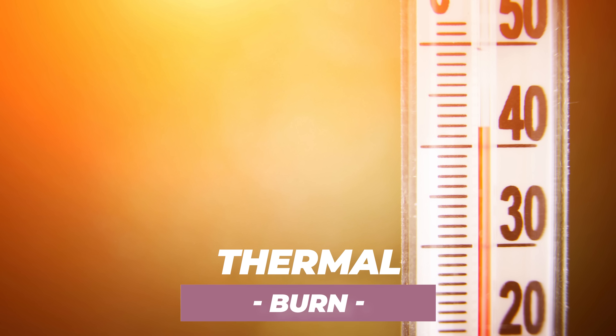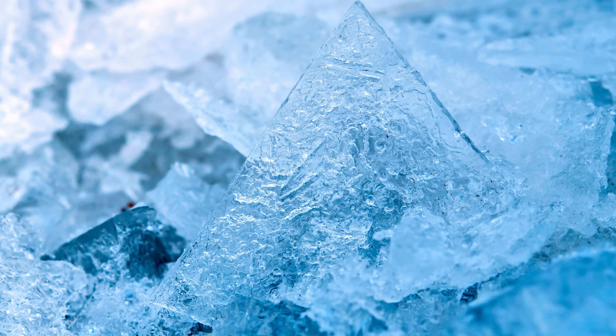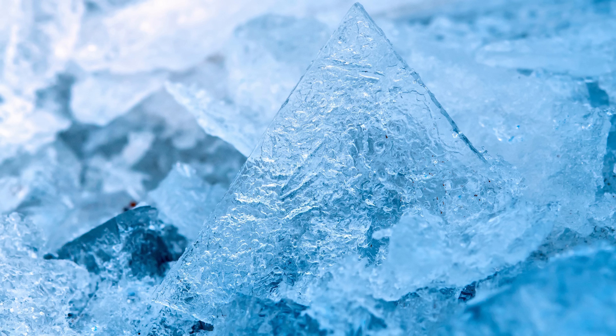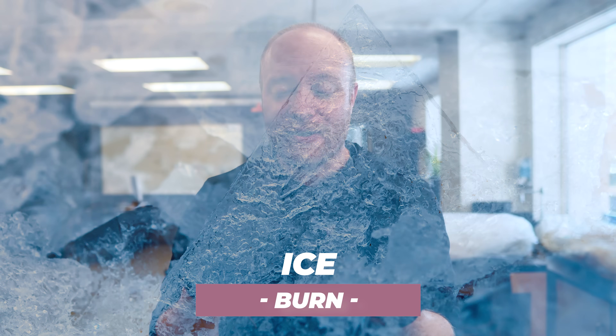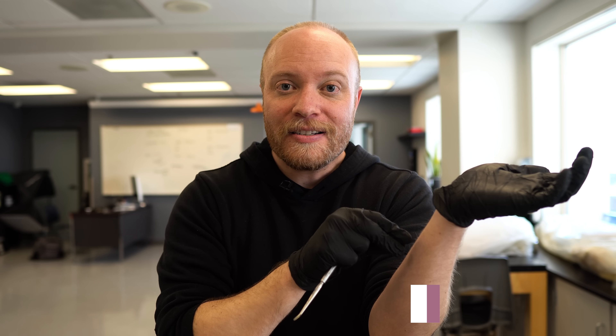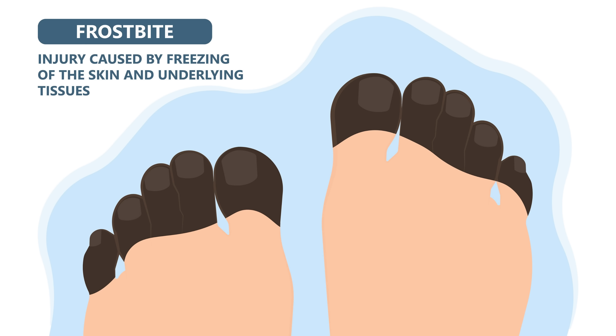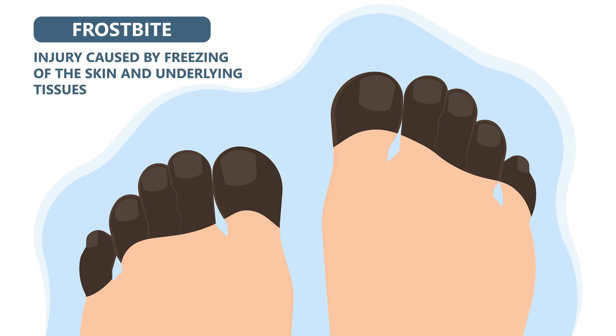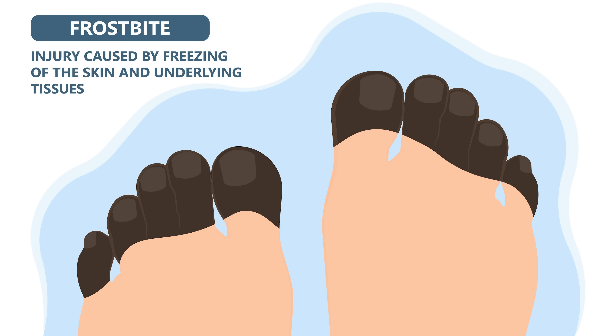Now let's talk about the different causes of burns. There are four primary causes. The first is a thermal burn — that just means temperature-based, and that's not always heat. You can also get a burn from something very cold. We call it an ice burn: take a piece of ice, stick it on your skin, leave it there long enough, and you can cause enough damage to create an ice burn. It's essentially frostbite, but since you're physically applying the cold object to the skin, that's what makes it a burn.